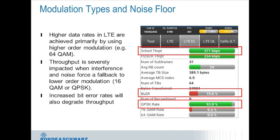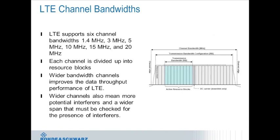LTE increases throughput through the use of higher-order modulation such as 64 QAM in the downlink. However, higher-order modulation schemes require a cleaner RF environment with a lower noise floor. If noise or interference rises, the network drops to lower-order schemes like 16 QAM or, worst case, QPSK, negating LTE's advantages. As shown in an example screenshot, scheduled throughput for a UE can be only a few hundred kbps due to high block error rate and near-exclusive use of QPSK — the lowest-order modulation scheme in LTE.